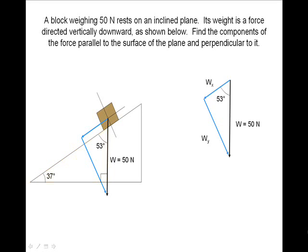Now we can draw our vector triangle. The components have been labeled and can be easily solved for. We will solve for our x component first. Input our values and find wx to equal negative 30 newtons.